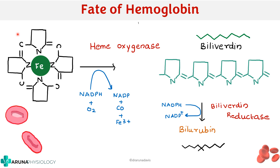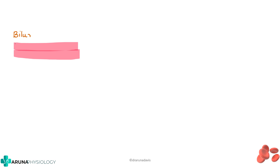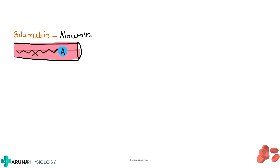After the breaking of hemoglobin we have got bilirubin. Bilirubin will be transported inside the blood with the help of a protein called albumin. Bilirubin can only be transported in the blood with the help of albumin, and like that, after traveling, they reach the liver.